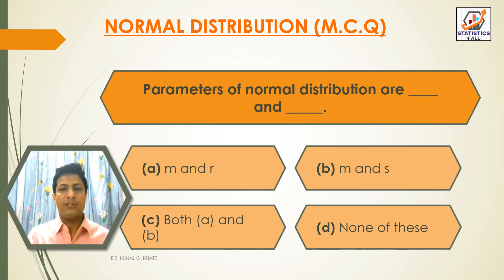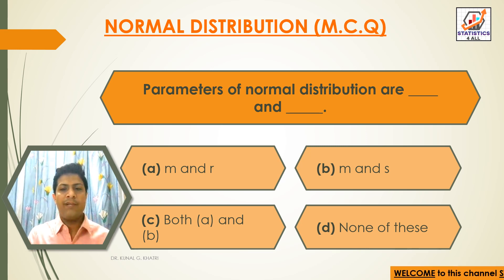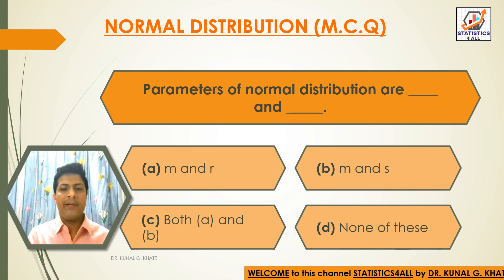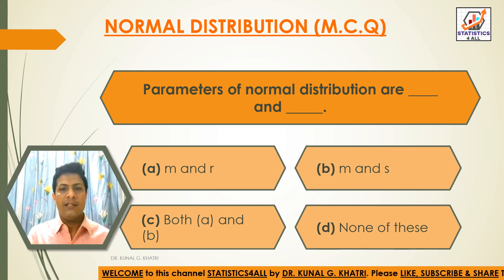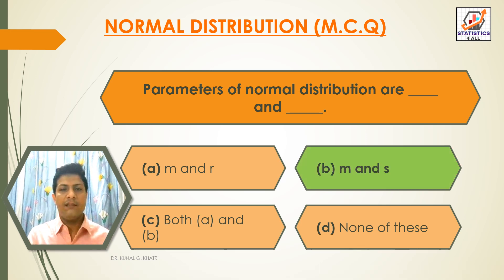Next question: parameters of normal distribution are dash and dash. Option A: M and R. Option B: M and S. Option C: Both A and B. Option D: None of these. The answer is Option B — M and S. The parameters of normal distribution are M and S.